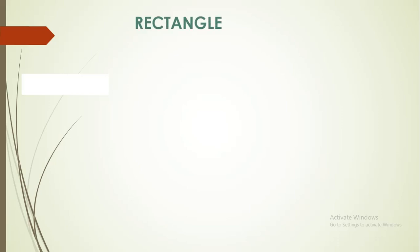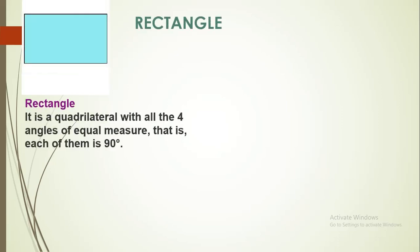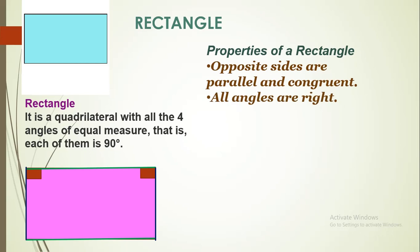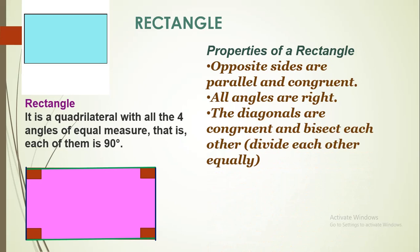Next, we have Rectangle. It is a quadrilateral with all four angles equal to 90 degrees. Properties: opposite sides are parallel and equal. All angles are right angles, that is 90 degrees. Diagonals are congruent — the diagonals are equal — and they bisect each other.